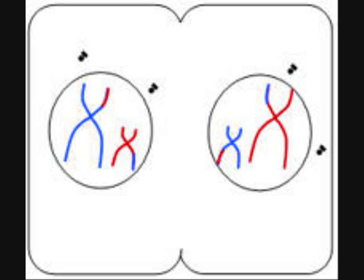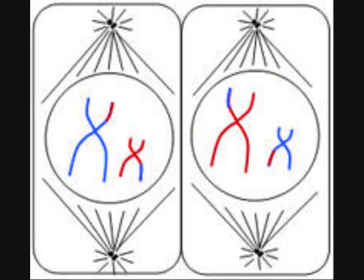In prophase 2, a spindle apparatus forms. Also, in late prophase, chromosomes, each still composed of two chromatids associated at the centromere, move toward the metaphase 2 plate.